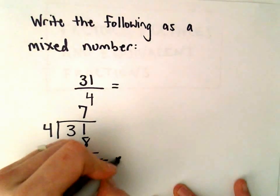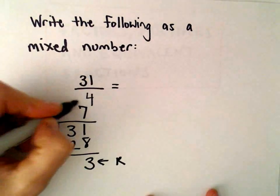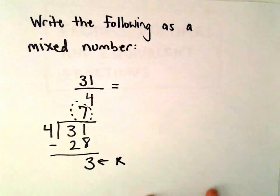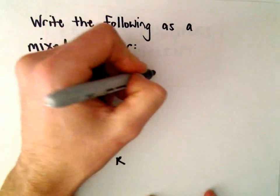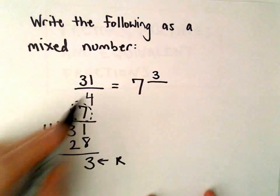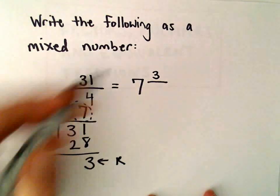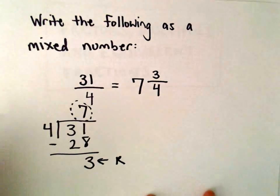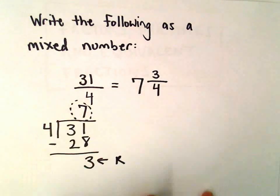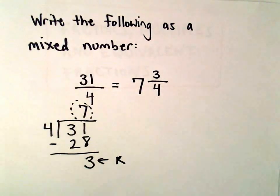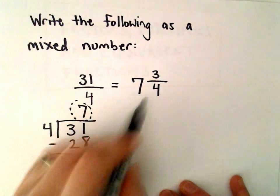So this is our remainder. All we have to do is we take whatever number's on top, which is 7, and then we take our remainder which is 3 and we divide it by the same original divisor. So 31 over 4, we can write that as 7 and 3 fourths. So that's the way to write it as a mixed number.